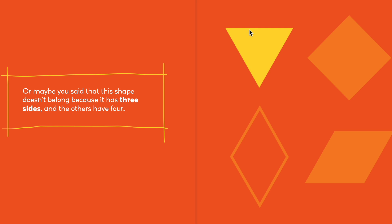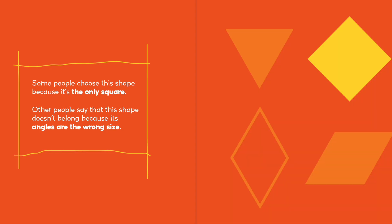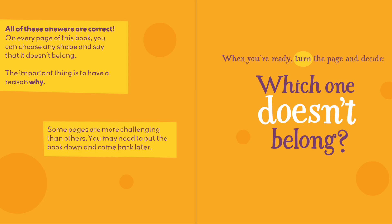Or maybe you said that this shape doesn't belong because it has three sides — one, two, three — and the others have four. Some people chose this shape because it's the only square. Other people say that this shape doesn't belong because its angles are the wrong size. All of these answers are correct. On every page of this book, you can choose any shape and say that it doesn't belong. The important thing is to have a reason why.